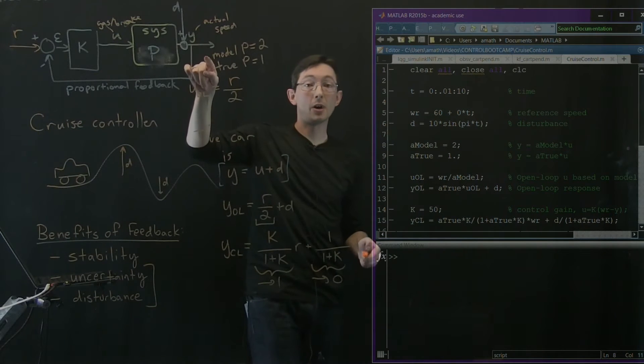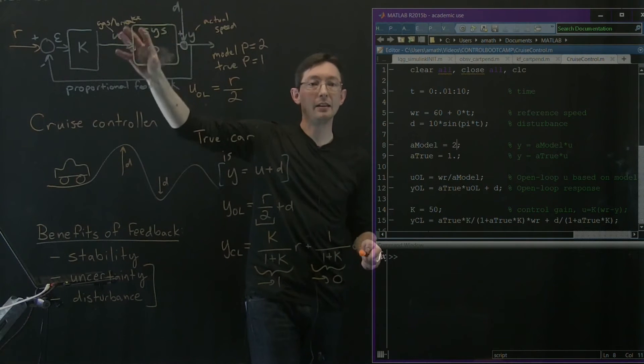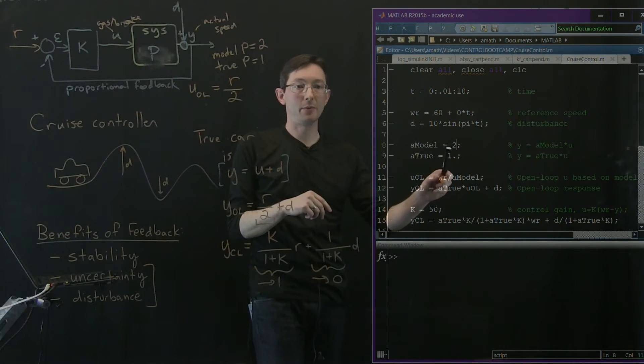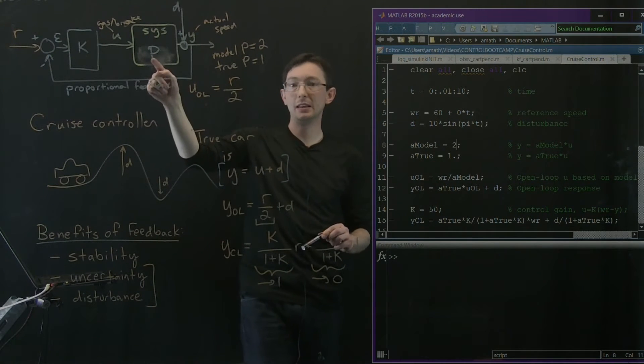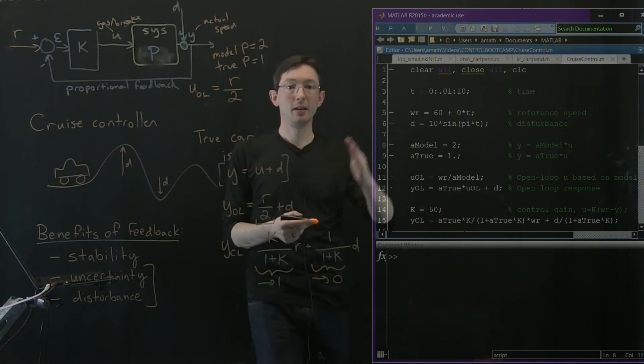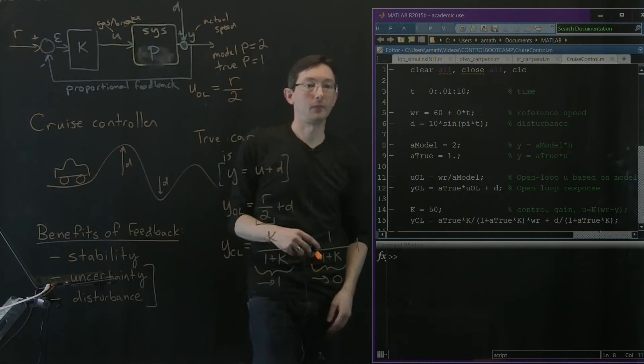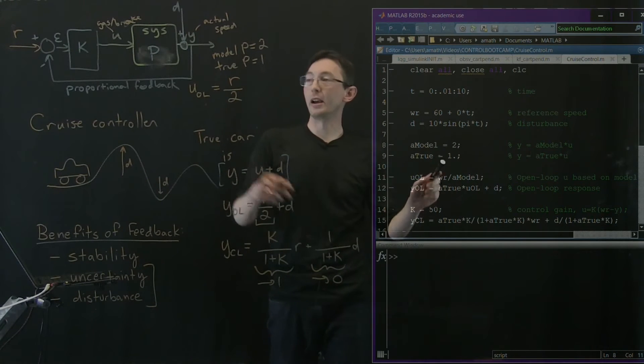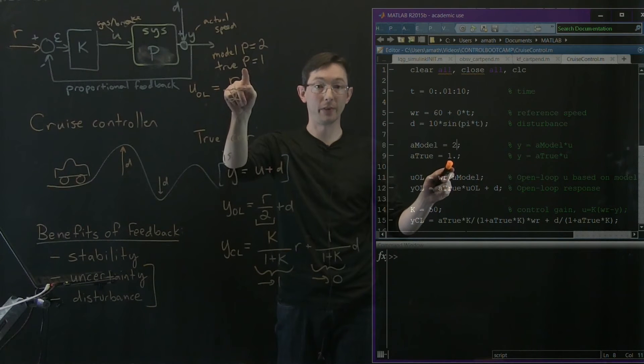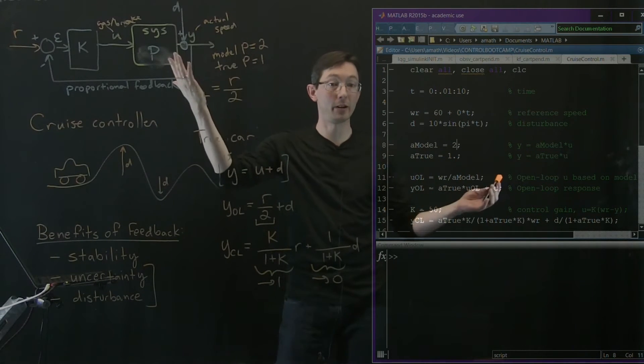Remember my model for the system, my naive kind of factory issued model is just a model equals two. That says P equals two. That means that if I hit the gas with one, I get a Y of two. But in reality, my car actually only has a transfer function of one. P is equal to one here. So it's not what my model says.